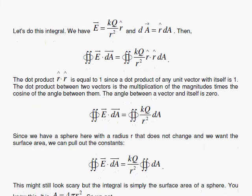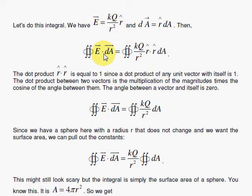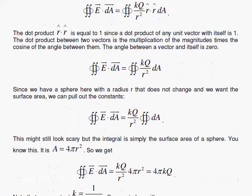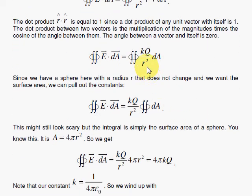So let's do the integral. We have E as given as KQ over R squared with the R hat. And the little DA area is R hat DA. Now R dot R, since these are unit vectors, this is one. So you simply get the KQ over R squared with the DA. And since we're looking at a sphere here, and R is a constant, where it's the radius, then we can pull all this stuff out.